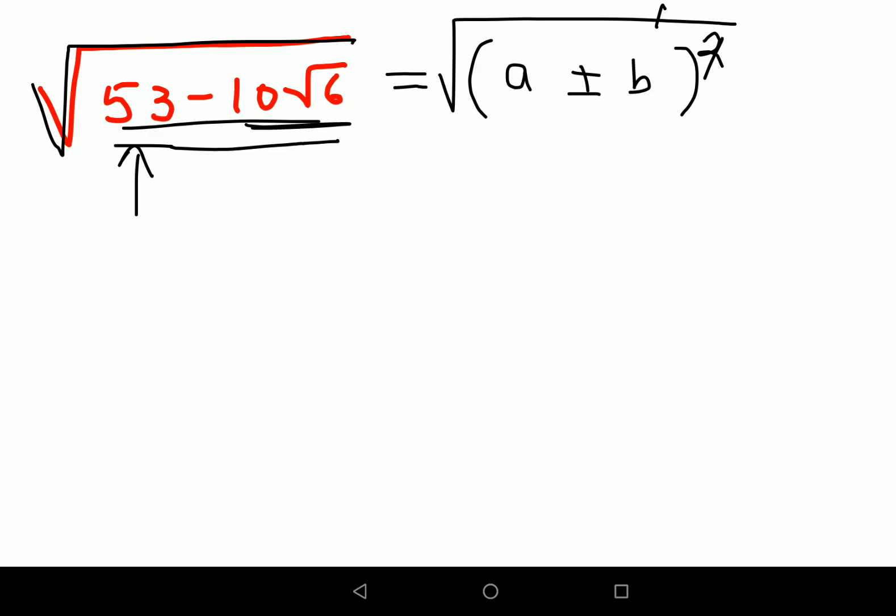Now let's look at 10. Because 53 is a prime number I can't do much on that, but obviously 10 root 6, I can write 10 as nothing but its prime factors. So we'll have 2 into 5, and this root 6 also can be written as root 2 into root 3.